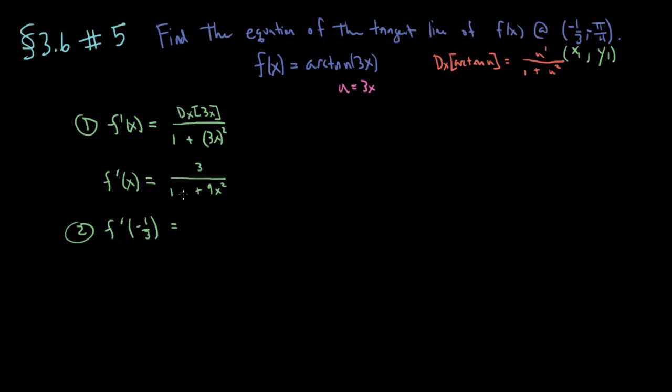f prime of negative 1 over 3. So we're evaluating our derivative at negative 1 over 3. So we get 3 divided by 1 plus 9 times negative 1 over 3 squared. Now that's not so bad. That's just 3 divided by 1 plus positive 1 over 9. Positive 1 over 9 times 9 is just 1. So our derivative at our given x value of negative 1 third is 3 halves. So this is our slope. f prime at negative 1 third equals 3 halves. That is our slope m.